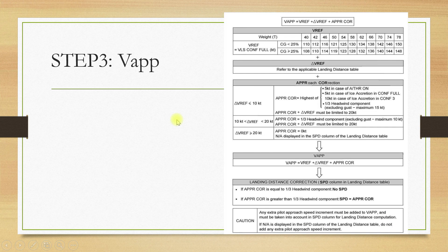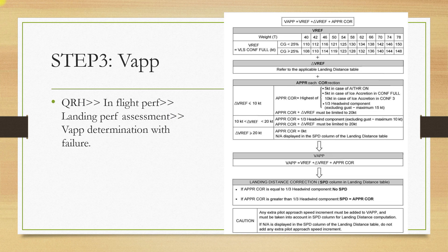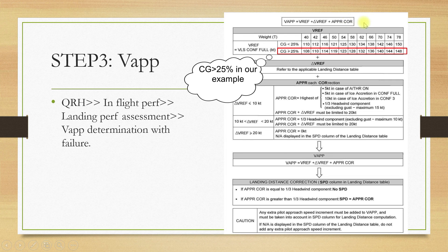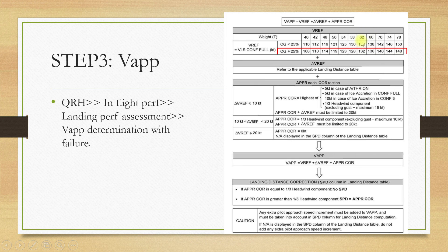The third step is the calculation of approach speed. Go to in-flight performance, landing performance assessment, and approach speed determination with failure. The formula given at the top of the table is: V approach = V ref + delta V ref + approach correction. For the first step, determining V ref against our weight of 65 tonnes: it is not listed for 65 tonnes, so we interpolate between 62 and 66 tonnes and we get a V ref of 135 knots.